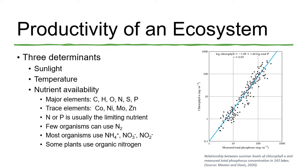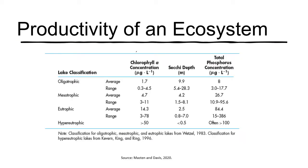The productivity of an ecosystem is also dependent on sunlight, temperature, and the availability of nutrients. As shown in this graph, chlorophyll A — which is a surrogate for algae growth and primary productivity — is a function of total phosphorus. Few organisms can use nitrogen in the N₂ form; most will use ammonia, nitrite, or nitrate. In this experiment, we will focus on measuring ammonia, nitrite, nitrate, and we will also measure phosphate.